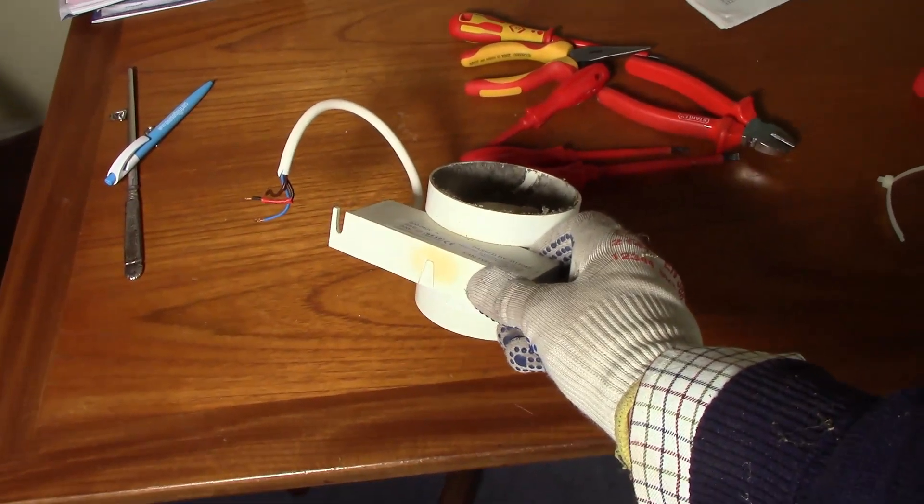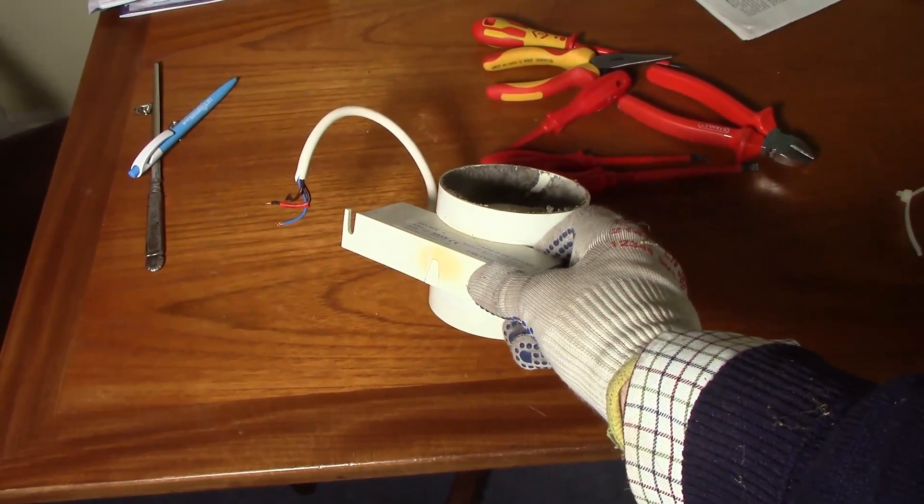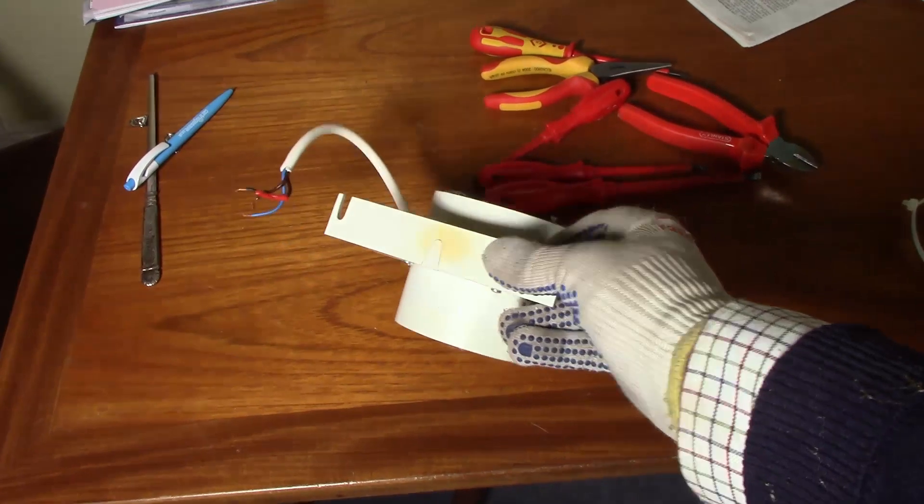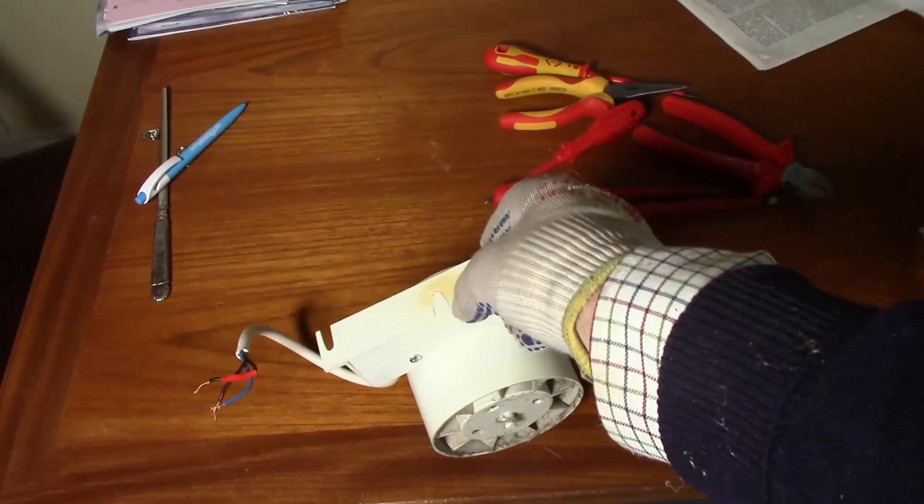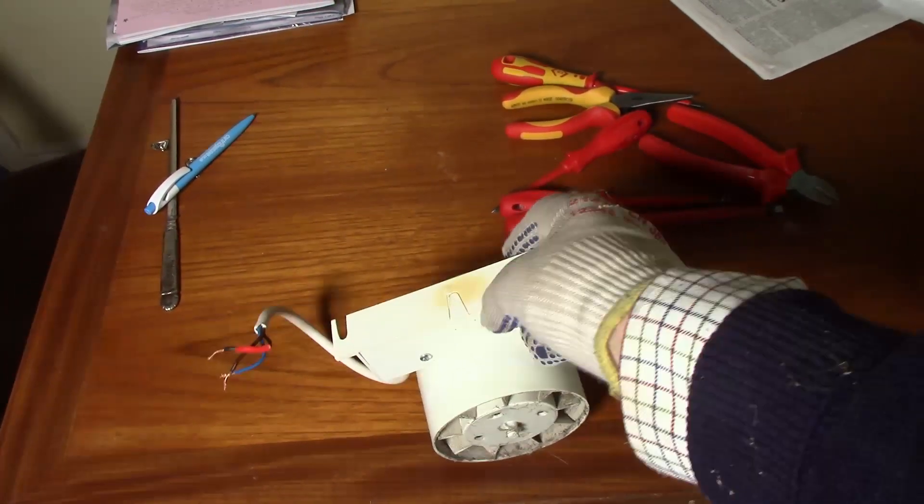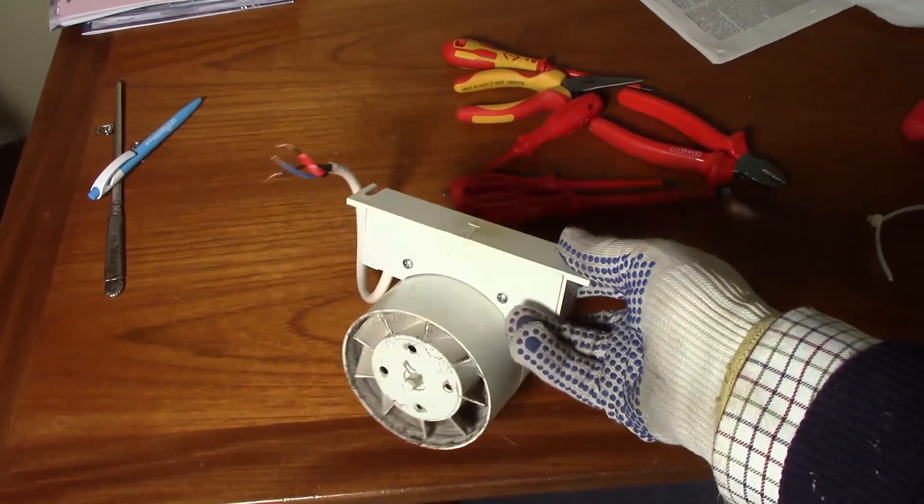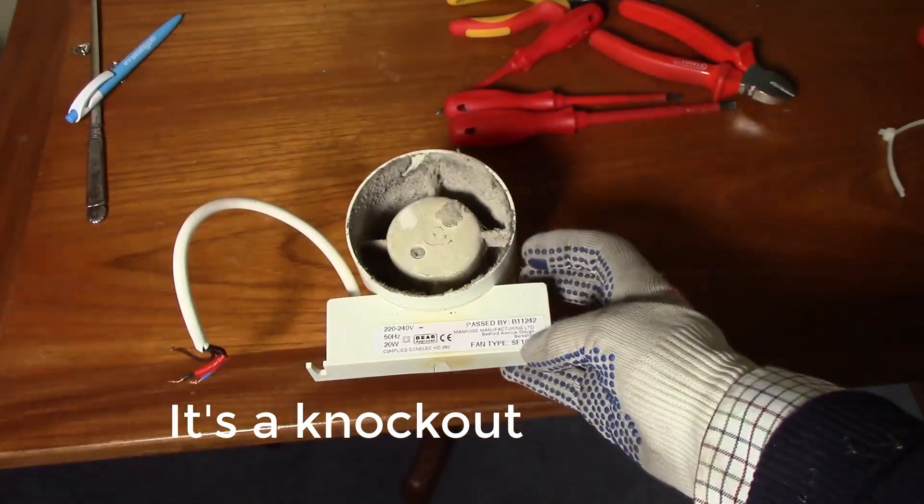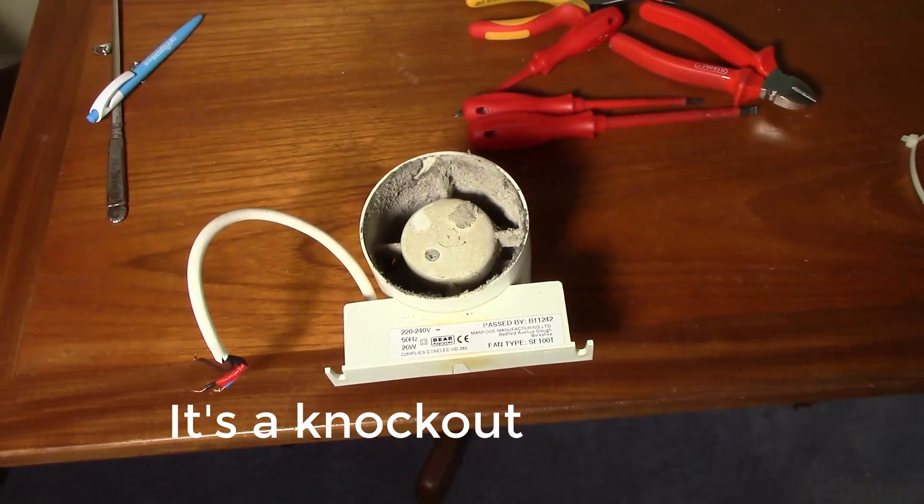Let's see what's what. There's a brown, looks like a burn stain there doesn't it? I don't know what this A shaped or V shaped bit of plastic is but we'll have a look inside and see what's what.